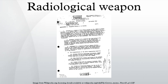A radiological weapon or radiological dispersion device is any weapon designed to spread radioactive material with the intent to kill and cause disruption. According to the U.S. Department of Defense, an RDD is any device, including any weapon or equipment, other than a nuclear explosive device, specifically designed to employ radioactive material by disseminating it to cause destruction, damage, or injury by means of the radiation produced by the decay of such material.